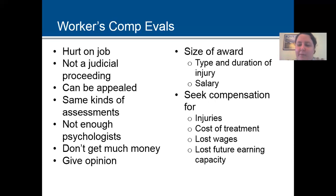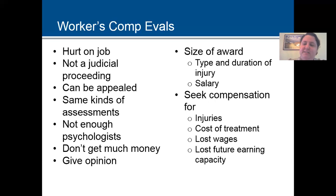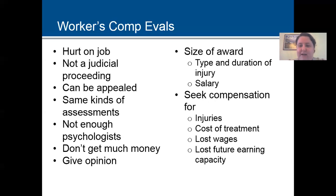Related to this is workers' comp evaluations. This is when someone's been hurt on the job and files claims for damages — these are usually physical as well as psychological. This is not a judicial proceeding; there's an administrative judge often appointed by the governor. This can be appealed to higher levels of workers' comp administration, and you do the same kinds of assessments we just talked through. The workers' comp bureau doesn't have enough psychologists to do these evaluations, so they usually contract with other psychologists.